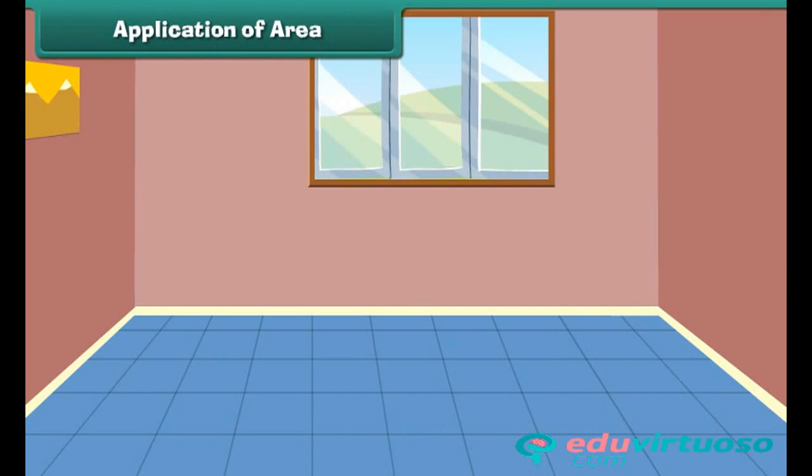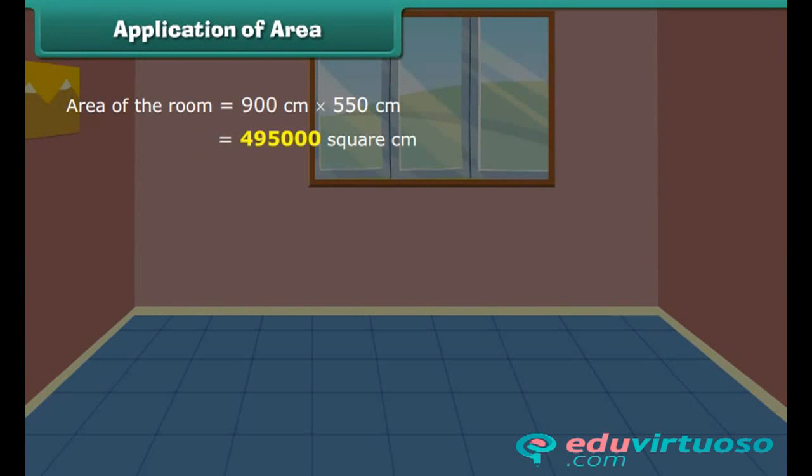Let us find the area of the room first. Area of the room equals length multiplied by width. It is equal to 4,95,000 square cm.